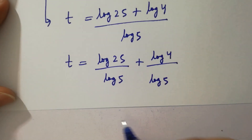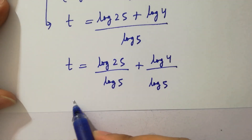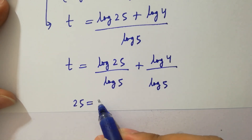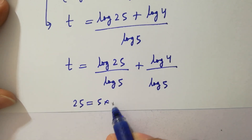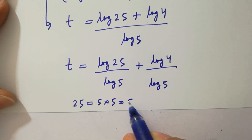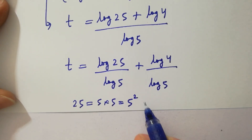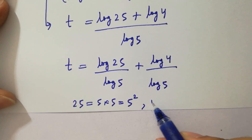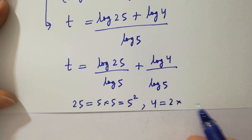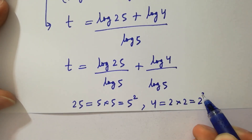Now, 25 equals 5 times 5, which is 5 squared, and 4 equals 2 times 2, which is 2 squared.